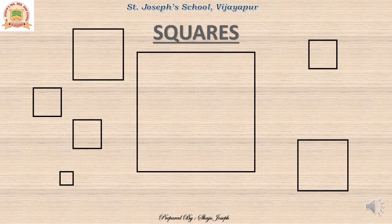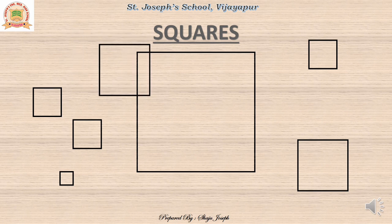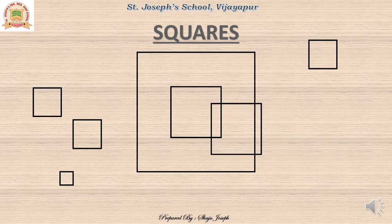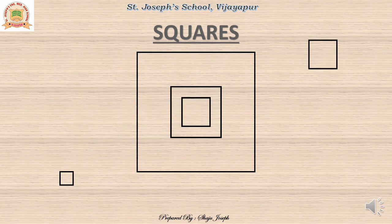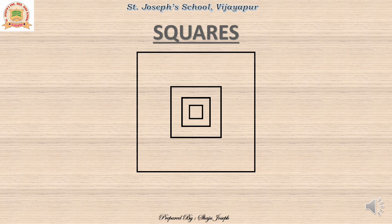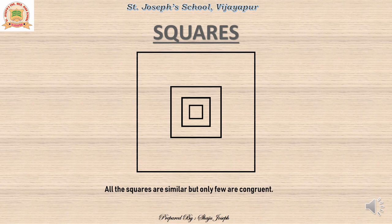Let us take a few more examples. Here I have taken many squares and tried to place everything on each other. Some of them coincided — they are congruent. Some did not coincide — they are not congruent but very similar. So we can say that all the squares are similar because of the same shape, but only few of them are congruent. All congruent squares must be similar, but all similar squares may not be congruent.